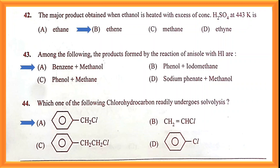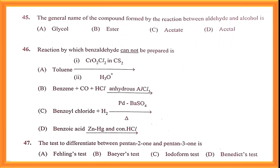Question number forty-five: the general name of the compound formed by the reaction between an aldehyde and an alcohol — you get hemiacetal and acetal as answers. Question number forty-six: the reaction by which benzaldehyde cannot be prepared — option D, because benzoic acid with zinc amalgam is a reducing agent and will not form benzaldehyde. Option D is the correct answer.